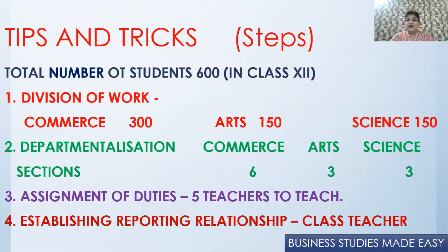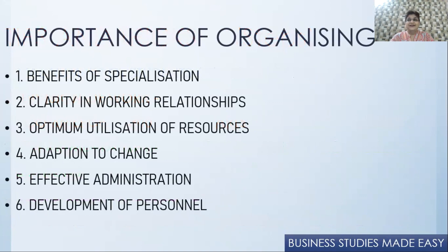Then establishing reporting relationships. Each section has one class teacher. If the child wants leave they ask the class teacher; if parents want to meet, it's with the class teacher at the parent-teacher meeting. If some child wants to go home early, they contact their class teacher, who is the one who allows the child to go. These are the four steps in organizing.